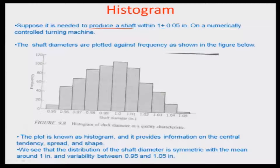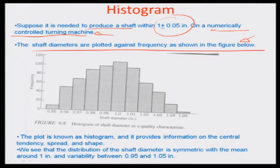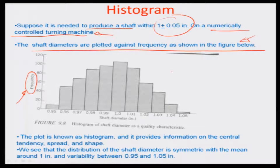Starting with the histogram: it lays out measurements in terms of value and frequency. For example, consider a shaft produced by a numerically controlled machine within a tolerance limit of 0.995 to 1.05 inches. We plot shaft diameters against frequency for a sample of about 300 to 400 pieces drawn from 30,000 produced over approximately one and a half to two days. This gives a distribution — the number of occurrences — against the shaft diameter.